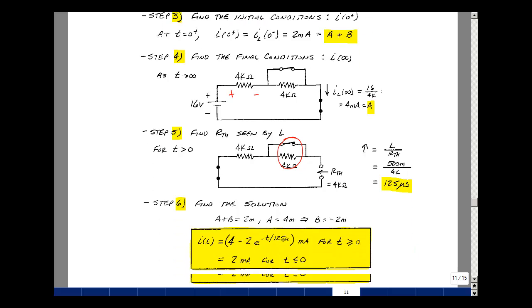Lastly, let's put it all together. I've got a plus b is 2 milliamps, but a is 4 milliamps, so therefore b is equal to minus 2 milliamps. So we've got a plus b times e to the minus t over tau.